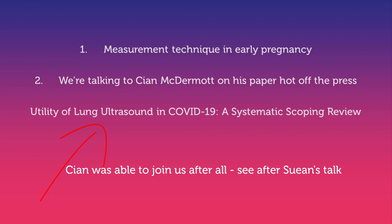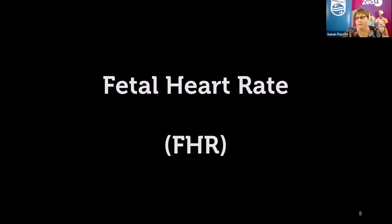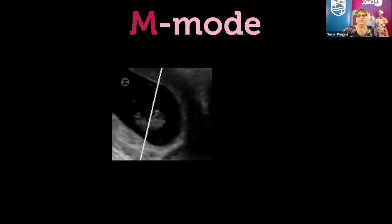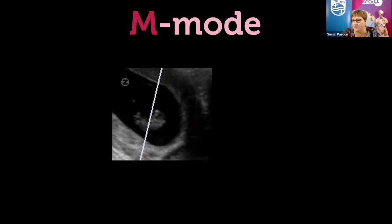Once you get into the scan and establish viability, the first thing you often want to do is confirm viability and measure the fetal heart rate. We measure the fetal heart rate with M-mode, which is defined as a time-motion display of the ultrasound wave along a specific line. It provides a monodimensional view of the structure being examined. The advantage of M-mode is its really high sampling rate, giving us high time resolution so that rapid movement such as the fetal heart can be recorded and measured very accurately.